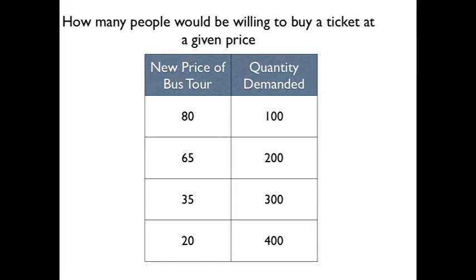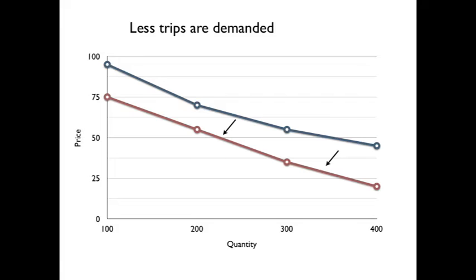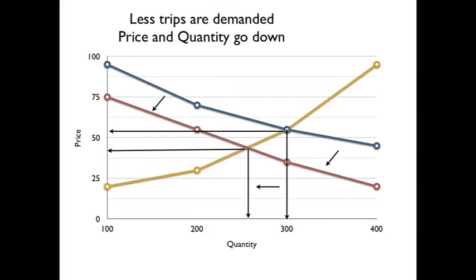We have a new schedule of numbers, and we see that graphically our demand curve is shifting in. If we look again with our supply curve, we can see that we have a new equilibrium at a lower point. We can use the curves to figure out where our new equilibrium is — how many people are actually traveling and at what price.